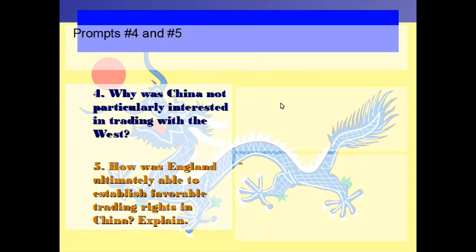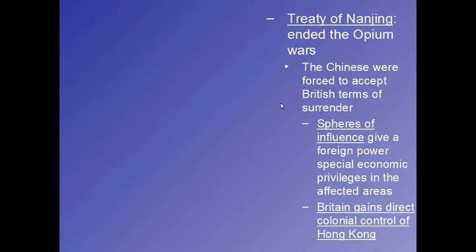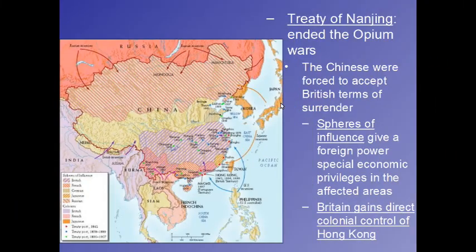The Treaty of Nanking ended the Opium Wars, where the Chinese were forced to accept British terms of surrender. This is where spheres of influence were truly adopted — giving foreign powers special economic privileges in affected areas of China, as seen on the map. China was split up and Britain gained direct colonial control of Hong Kong. There again is the map showing the spheres of influence.